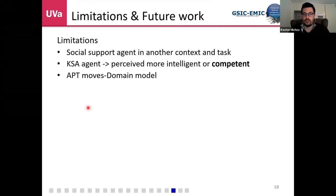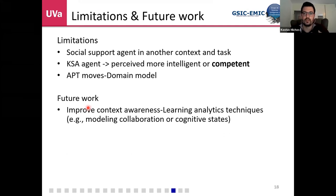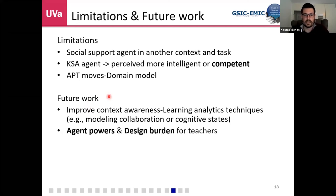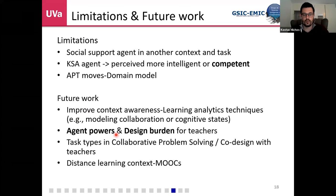Some limitations: we need to investigate the social support agent in other tasks. Without a knowledge support agent, it might be perceived as more intelligent or competent by students. There is also a restriction with APT moves that they are strictly connected with the domain model, so we may look into how to model collaboration with learning analytics techniques. Enhancing agent capabilities could create a design burden for teachers who must configure behaviors in advance. Future work will look at different task types, including collaborative problem-solving tasks, and this type of activity in distance learning contexts such as MOOCs.